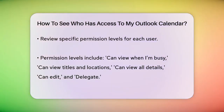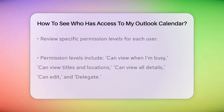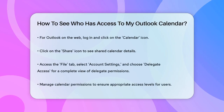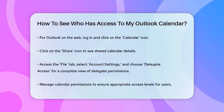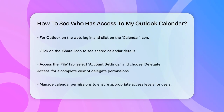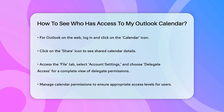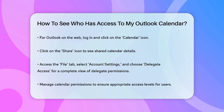To double-check, you can also go to the File tab in Outlook, select Account Settings, and then choose Delegate Access. This will show you any users who have been granted delegate permissions to your calendar.